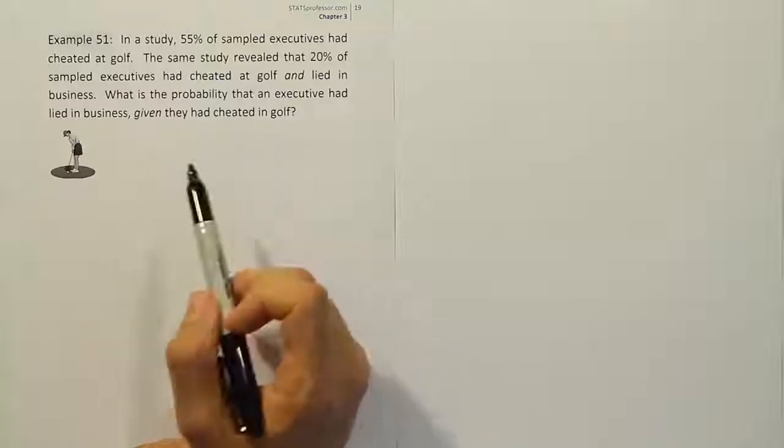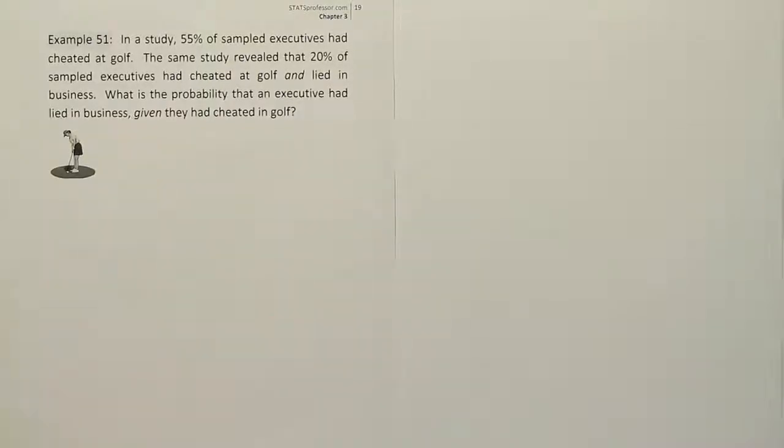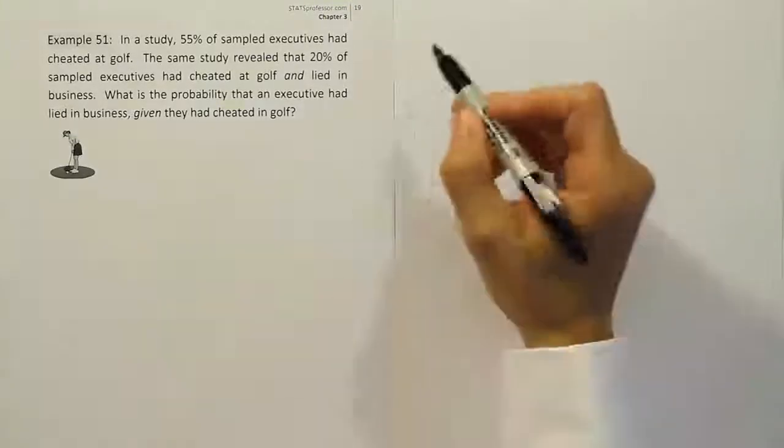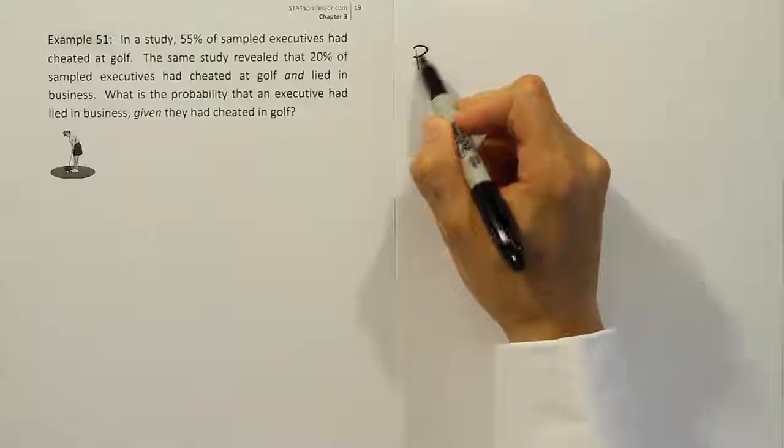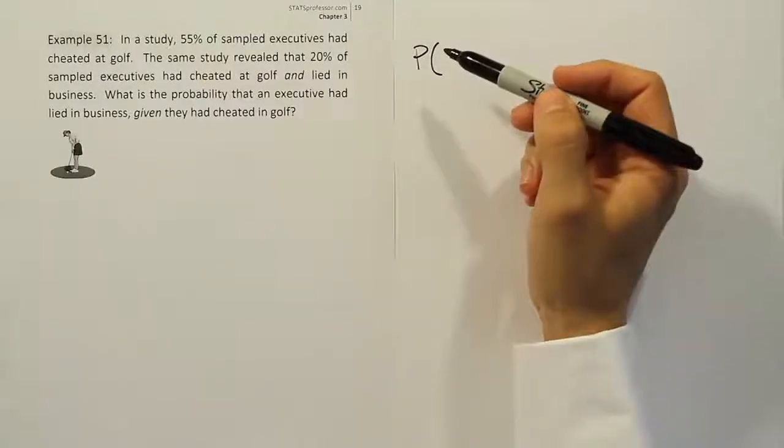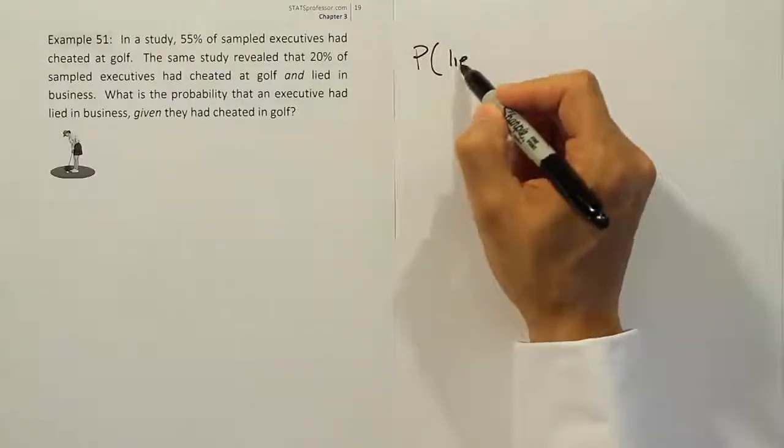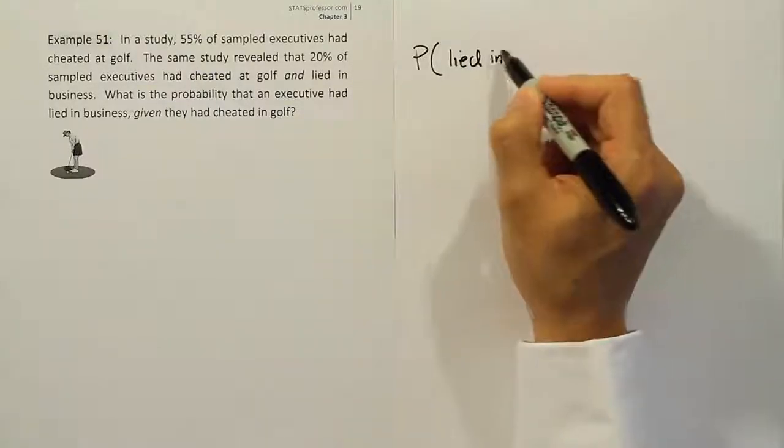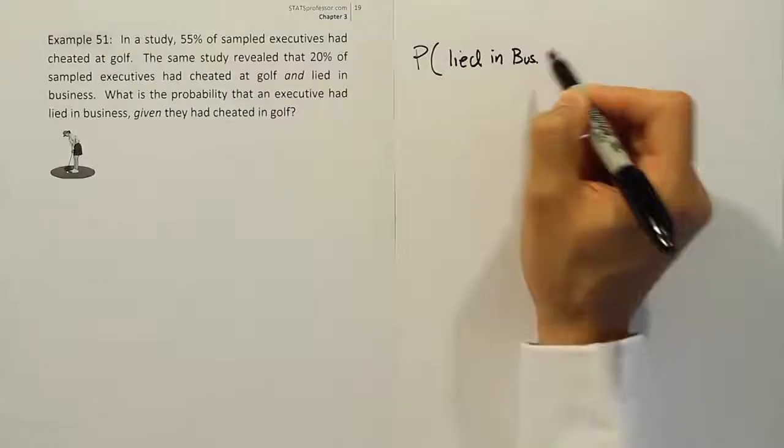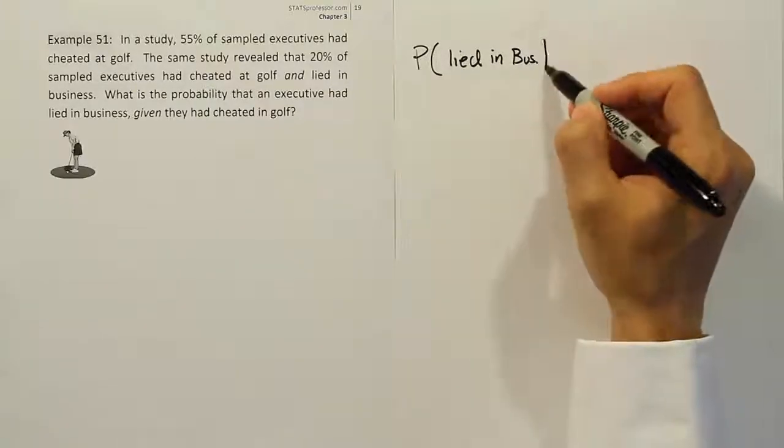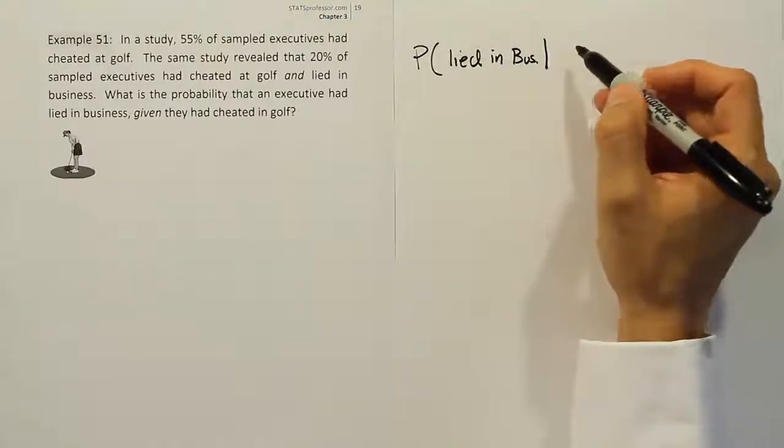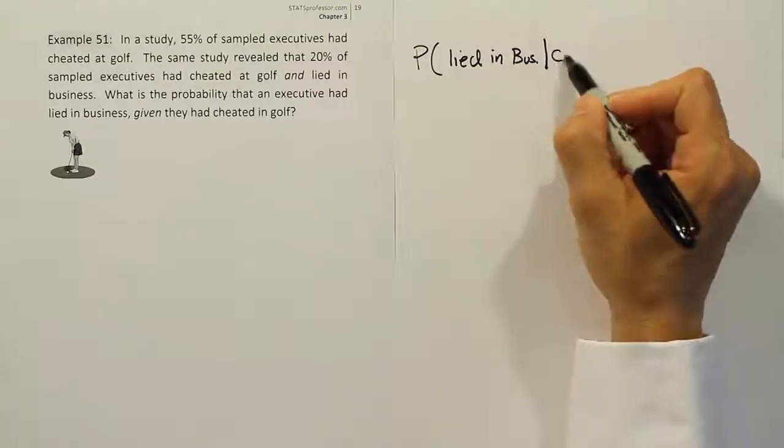So normally if we have a table, we can use our shortcut formula, but we don't have a table here. So we're going to have to use the definition of conditional probability to solve this problem. Let's start by writing out the statement first. We're looking for the probability that an executive lied in business, given that they had cheated in golf.